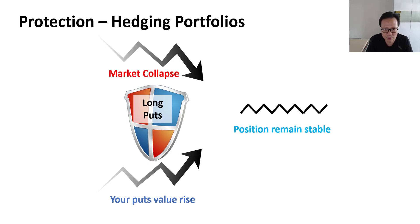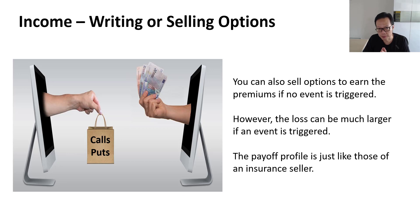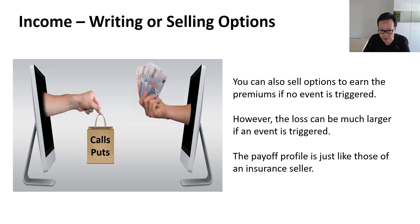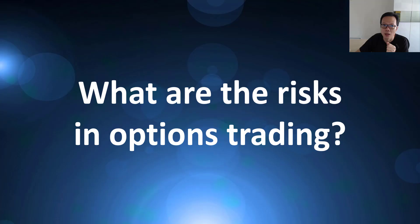Selling options for income is another popular strategy, particularly among retail investors. If you sell options — be it calls or puts — and no event is triggered, you get to keep the premiums permanently. If you keep selling options regularly you can create something like a regular income stream. However, while the premiums you collect are fixed, the loss you can potentially encounter when a share price moves sharply against you can be huge — many times bigger than the premiums you collect.